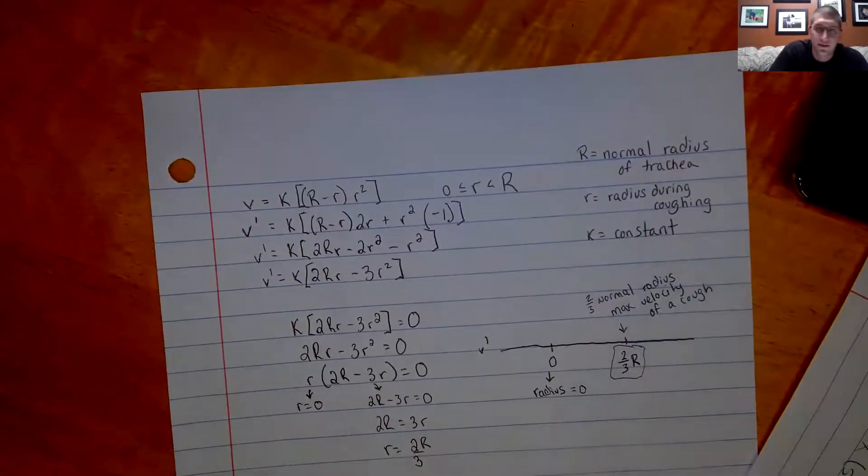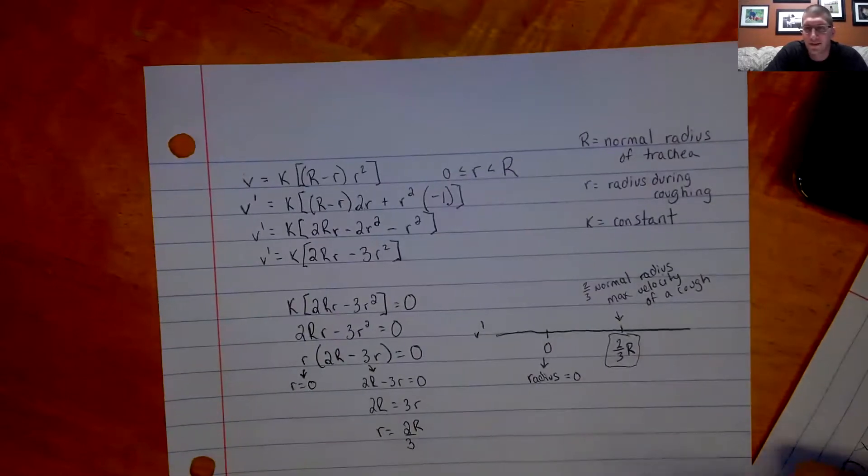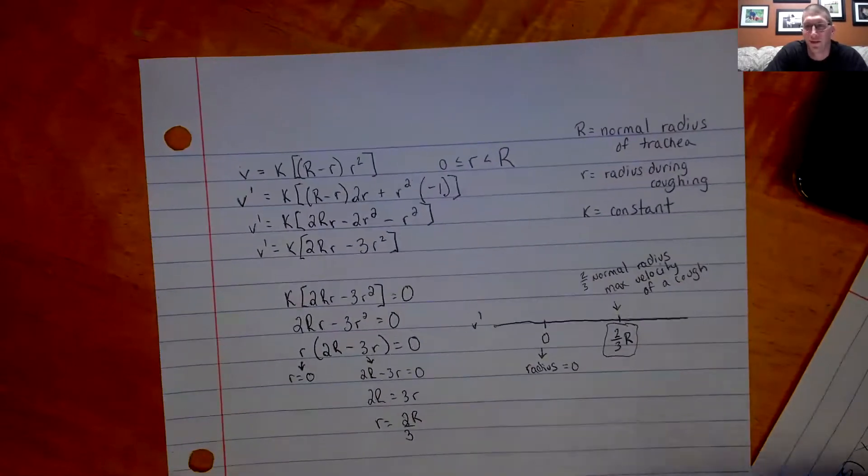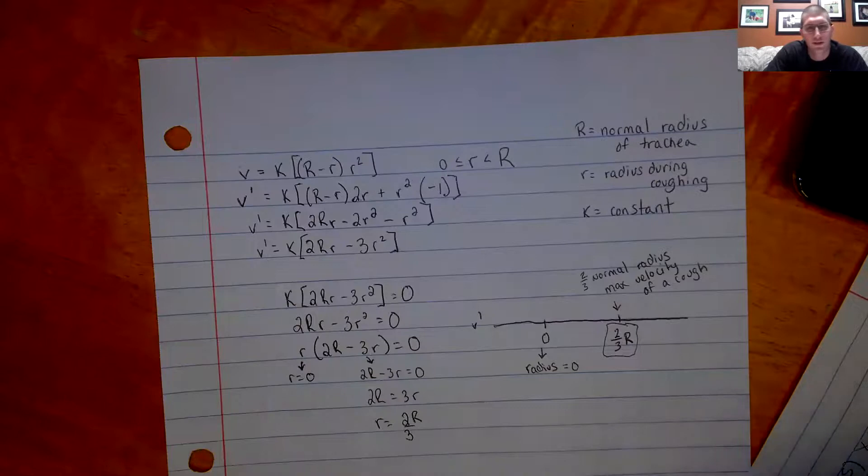All right. So that's it for that video. Hope you enjoyed it. Hope it made it relative to what we're going through right now. If you want to produce the max velocity of a cough, just try to control your trachea to a radius that's 2 thirds its normal state. How you do that, that's for somebody else to determine. I'm just here for the math.